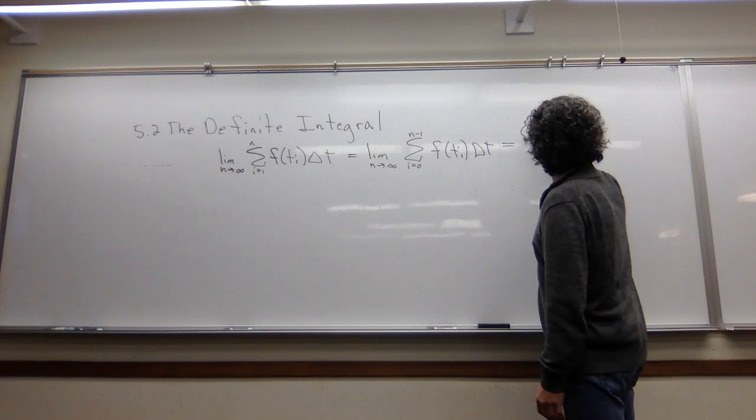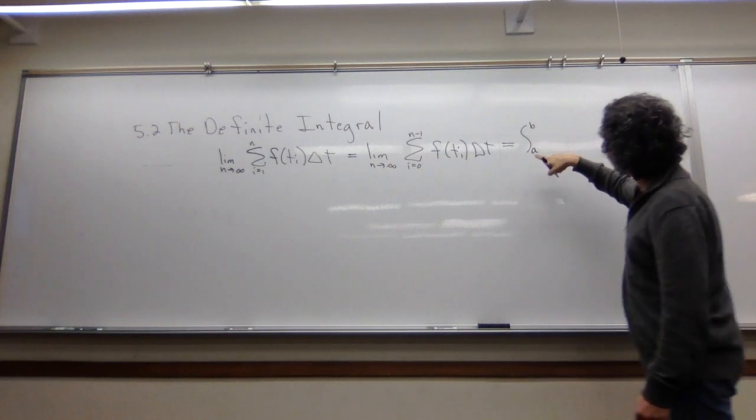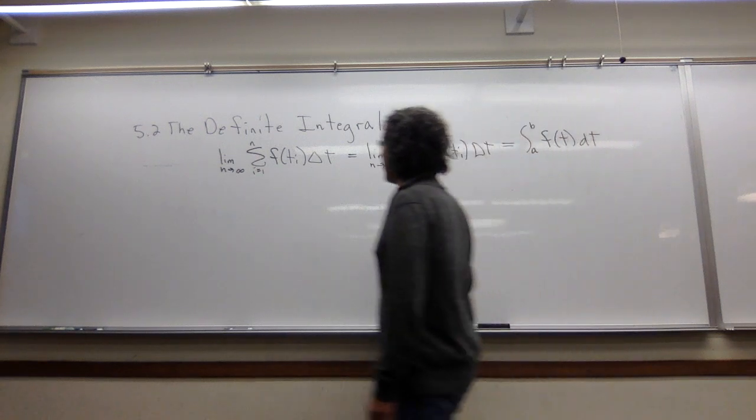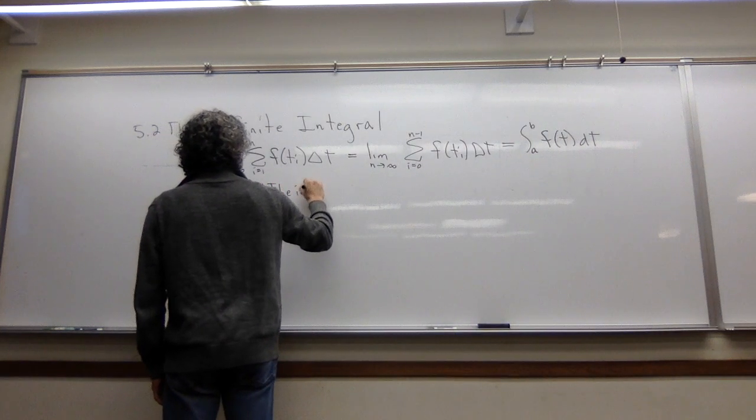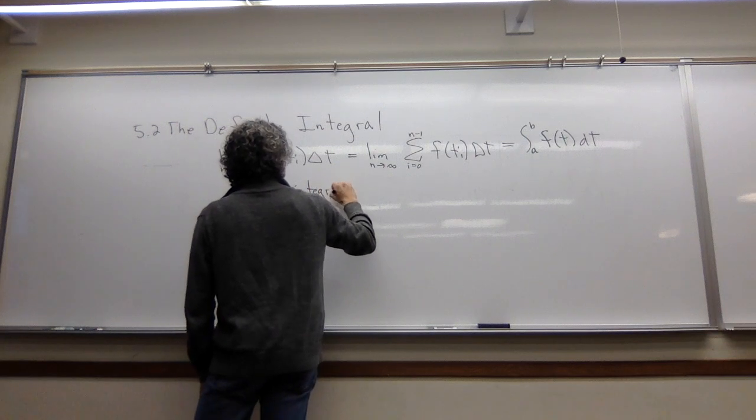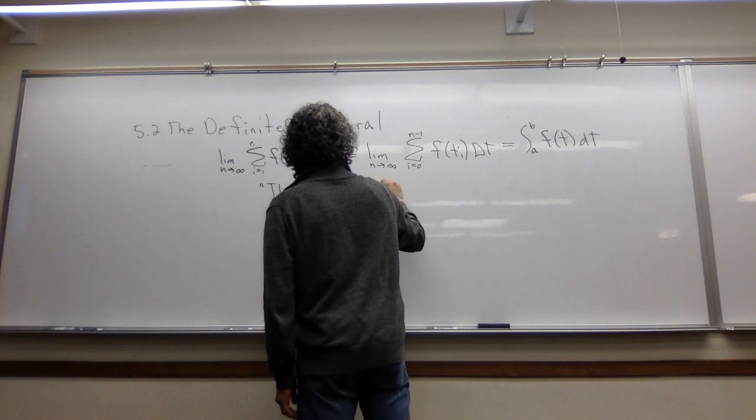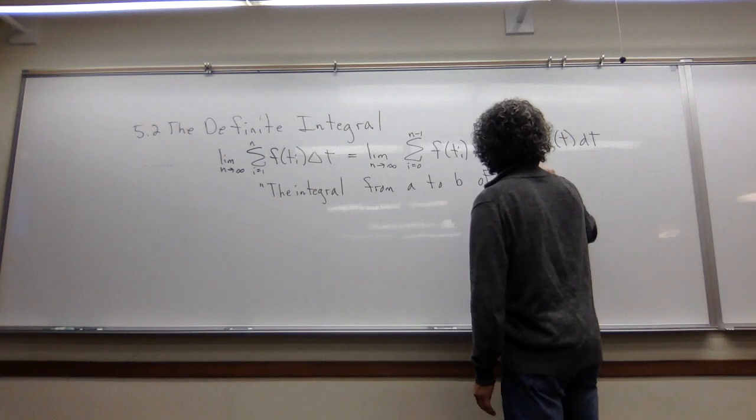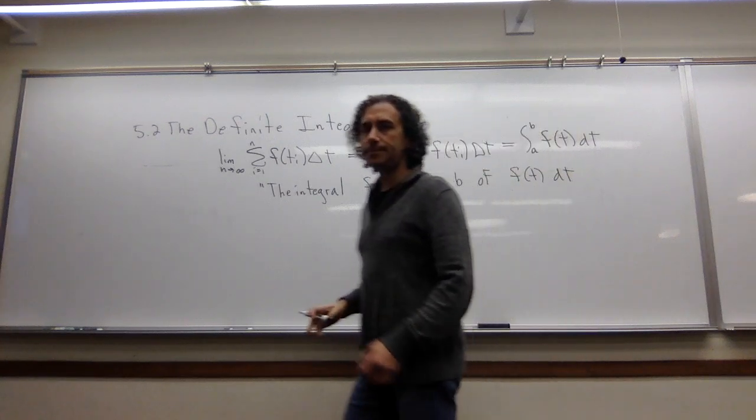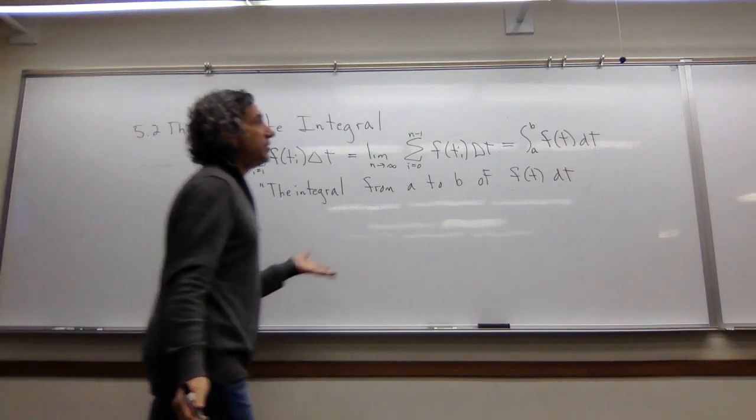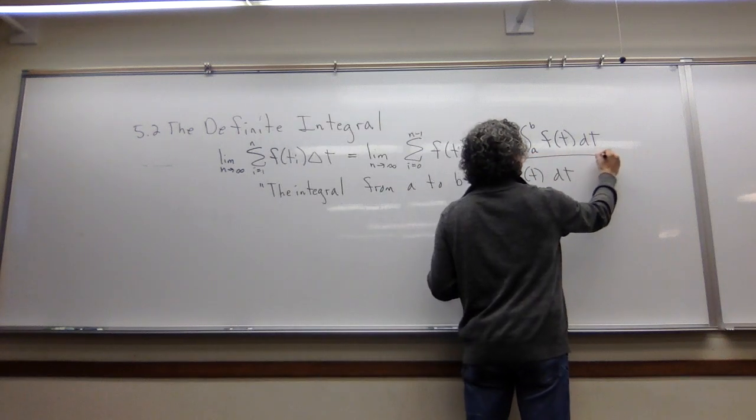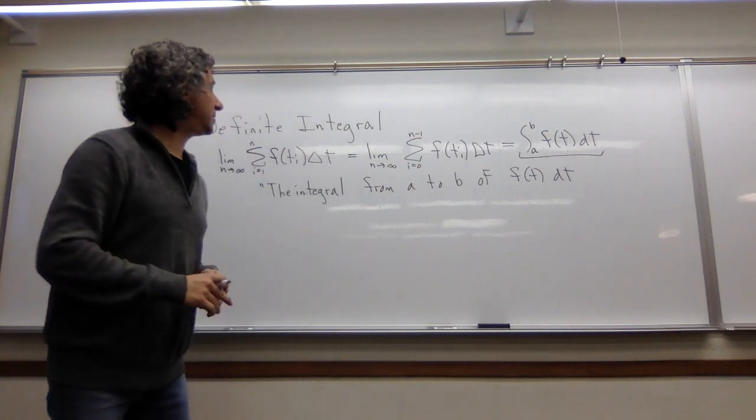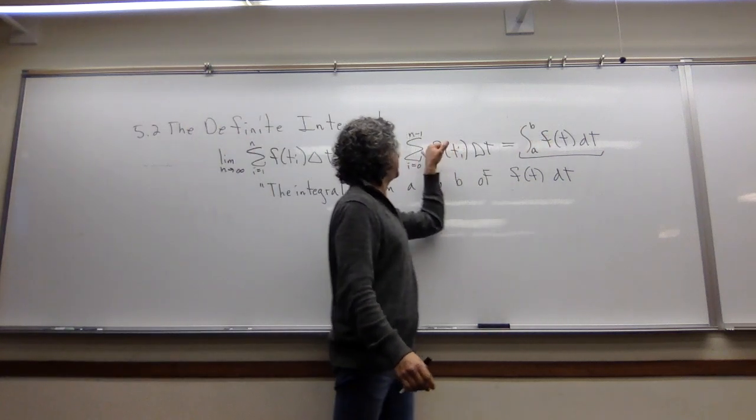I'm going to write the integral from a to b of f of t dt. This is read as the integral from a to b of f of t dt. This is good notation because this integral sign almost looks like an S for sum. It looks like a kind of continuous version of this thing.